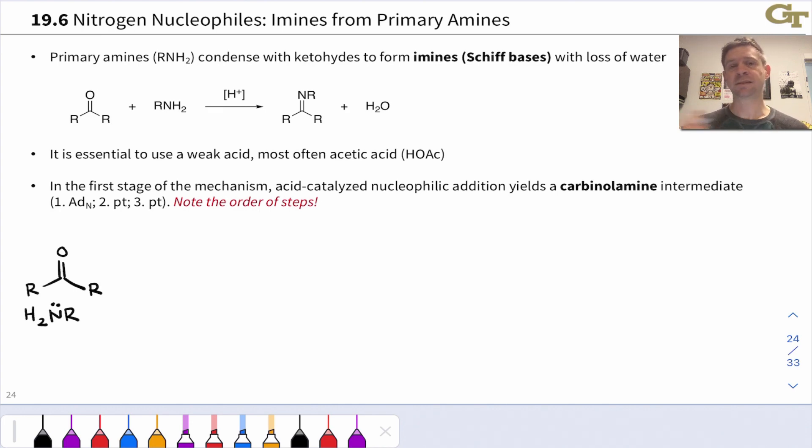In acetal formation we can use a small amount of strong acid as a catalyst, but in imine condensation it is critical to use a weak acid, and acetic acid is a standard. The reason we need to use a weak acid is that strong acid will protonate the basic nitrogen of the amine reactant, completely shutting down its nucleophilic reactivity. We want to use a weak acid that only protonates the amine nitrogen to a small extent, leaving most of it unprotonated and able to act as a nucleophile.